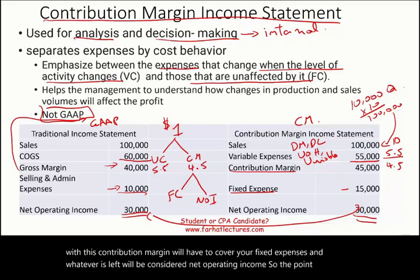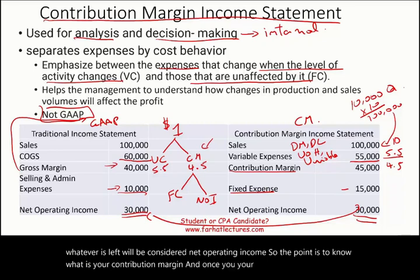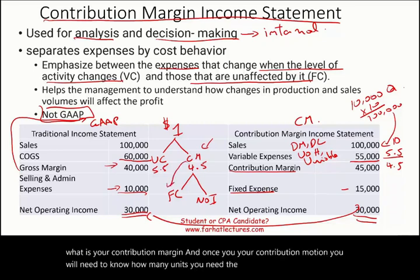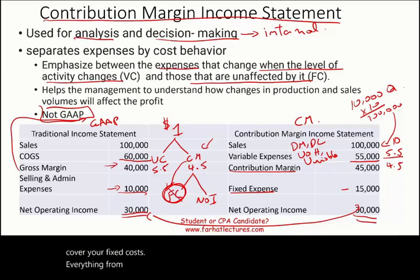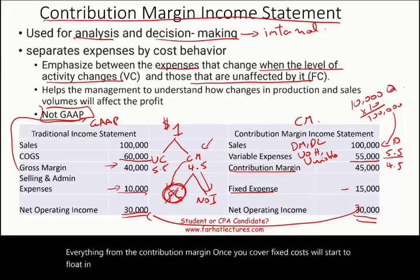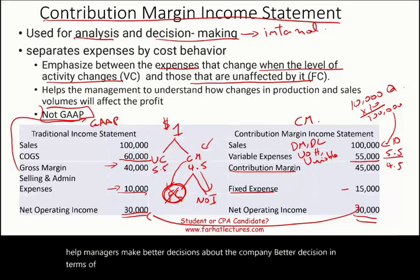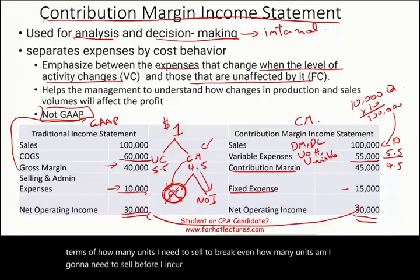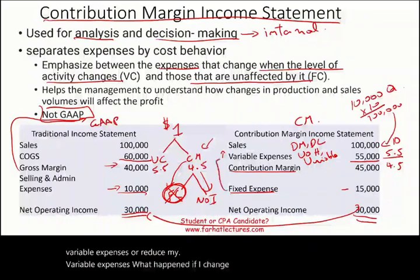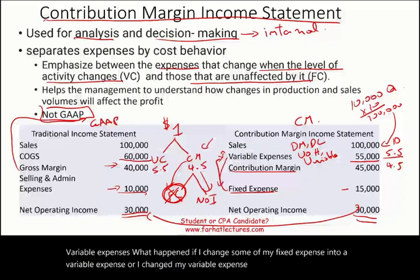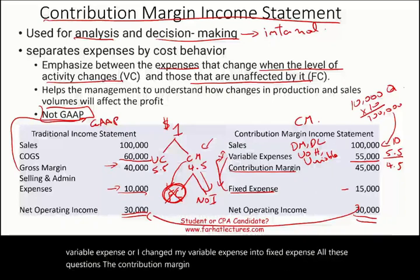The key is to know your contribution margin, and once you know it, you need to determine how many units you must sell to cover your fixed costs. Once fixed costs are covered, everything from the contribution margin flows to net operating income. The contribution margin income statement helps managers make better decisions — how many units to sell to break even, how many units before incurring a loss, what happens if sales increase or decrease by 5,000 units, or if variable or fixed expenses change.